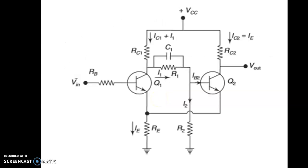This is the circuit diagram of the Schmitt Trigger, which consists of two identical transistors Q1 and Q2 coupled through an emitter resistance RE. The resistances R1 and R2 form a voltage divider bias across VC1 and ground. This provides a small forward bias to the base-emitter junction of transistor Q2.